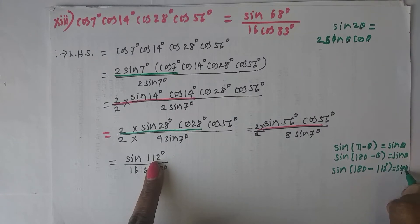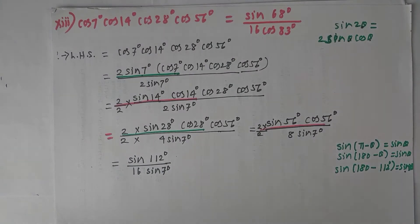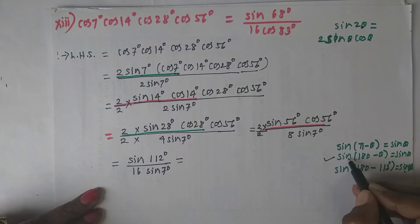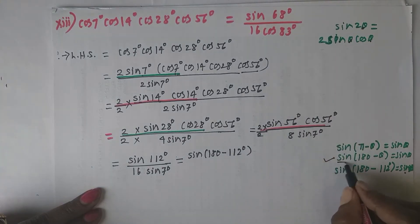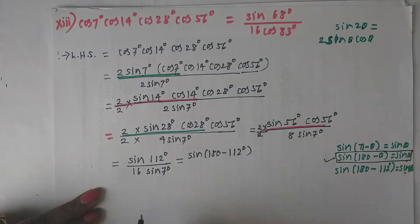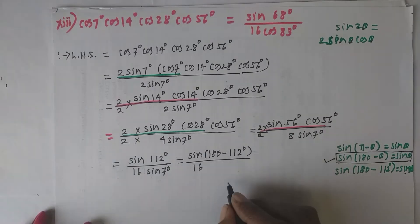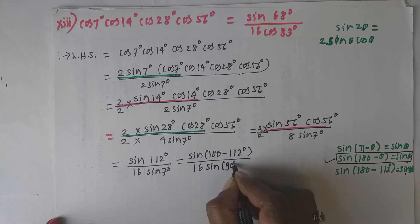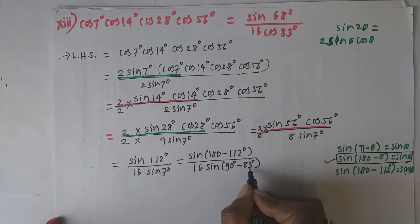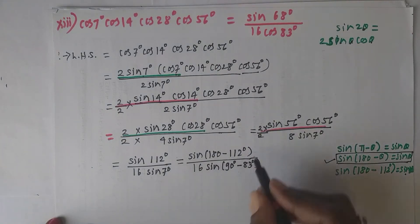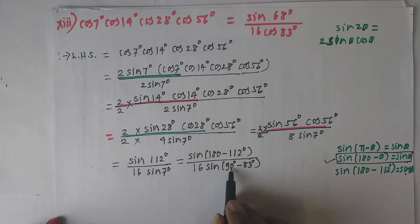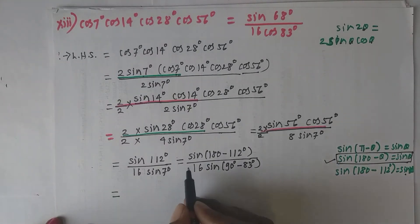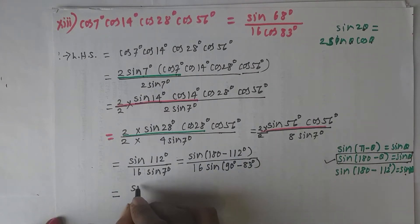Next problem: prove sin²(-160°)/sin²70° + sin(180° - θ)/sinθ = sec²20°. Write down the left hand side. Using sin(-θ) = -sinθ, we write sin(-160°) as -sin160°. Squaring gives sin²160°. Using sin(180° - θ) = sinθ, the second term sinθ/sinθ = 1.